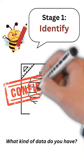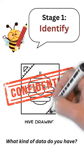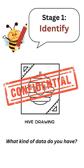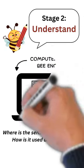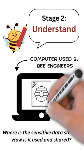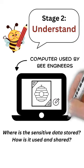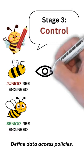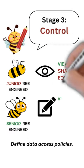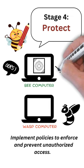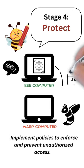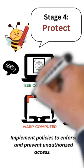Stage 1: Identify. What kind of data do you have? Stage 2: Understand. Where is the sensitive data stored? How is it used and shared? Stage 3: Control. Define data access policies.